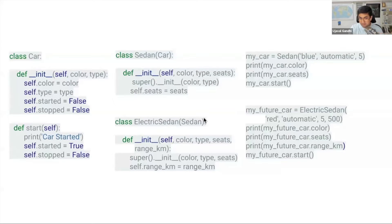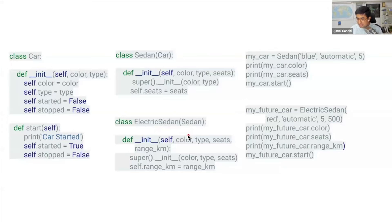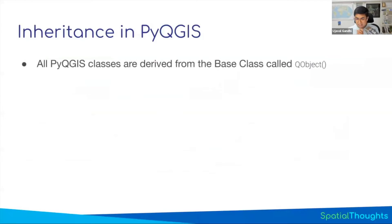Most of the time you are not writing code like this — you are just using code somebody else has written. You say I want to initialize the ElectricSedan — how do I do this? You need to find all the parameters, which requires going a few levels down to see what classes it inherits from. Those inheritance chains matter in PyQGIS.